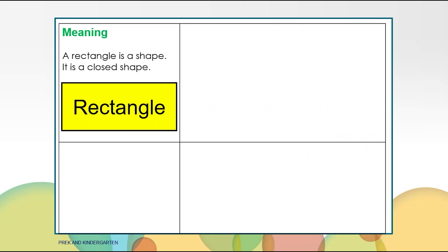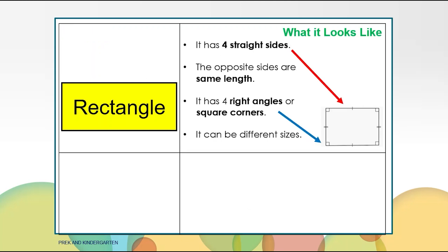The last shape we are going to look at is the rectangle. Just like the other shapes it is a closed shape. The rectangle has four straight sides. The opposite sides must be the same length. The red arrow is pointing to a side. The rectangle also has four right angles or square corners. The blue arrow is pointing to a square corner.